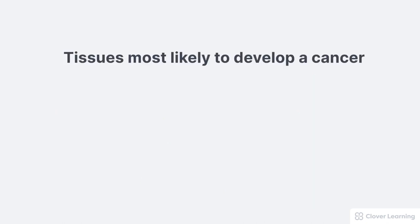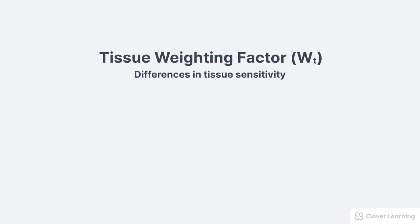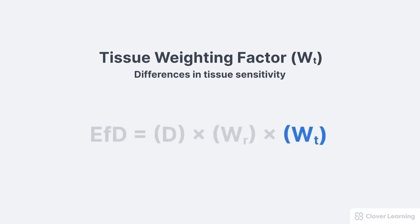Different tissues in the body have different sensitivities to radiation. For example, if the entire body is exposed to the same dose of radiation, the tissues most likely to develop a cancer are the lungs, the breast, the gonads, and the bone marrow — because these tissues are more radiosensitive than other tissues in the body. These tissues are as much as 10 times more sensitive to radiation than other tissues. Differences in tissue sensitivities are described by the tissue weighting factor, or WT, a variable used to calculate the effective dose.